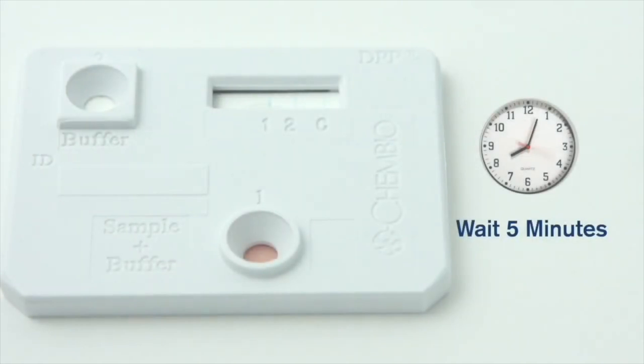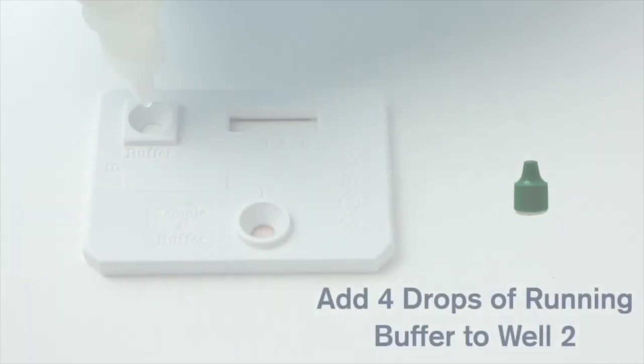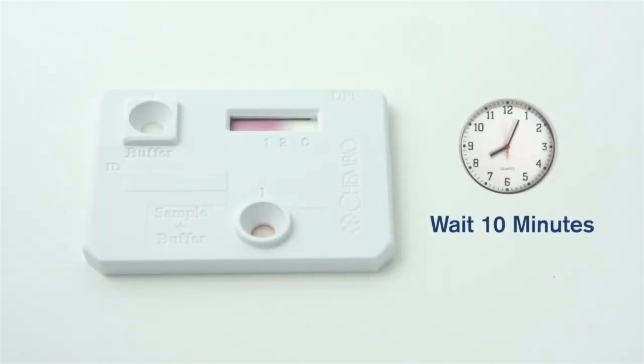Start your timer for 5 minutes. After 5 minutes, invert the DPP running buffer bottle and hold it vertically over buffer well 2 while adding four drops into the well. Wait 10 minutes, but no longer than 25 minutes after adding the DPP running buffer to well 2 before reading the test.